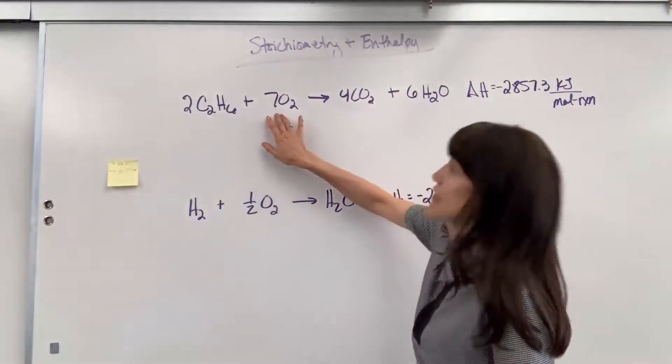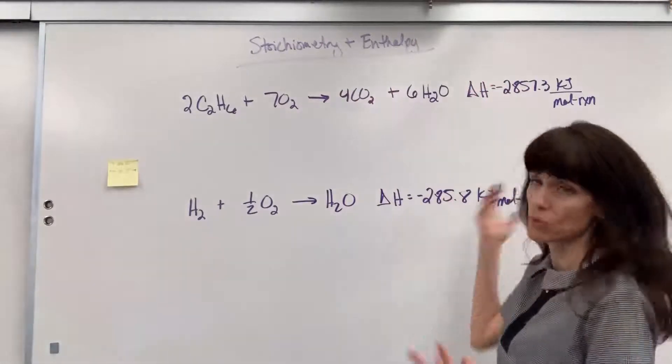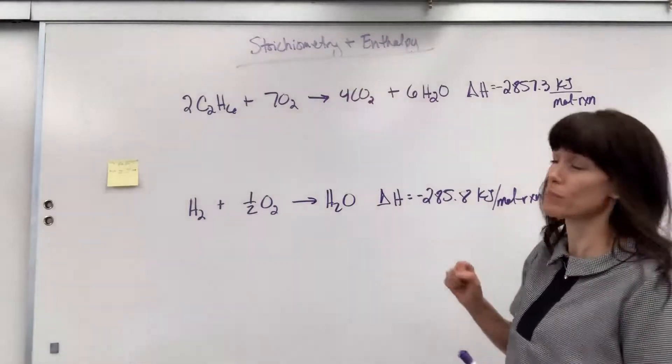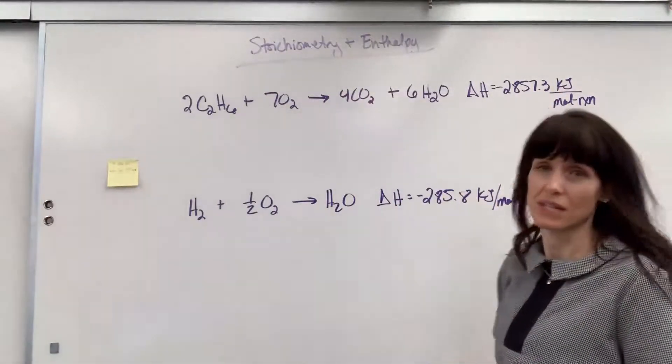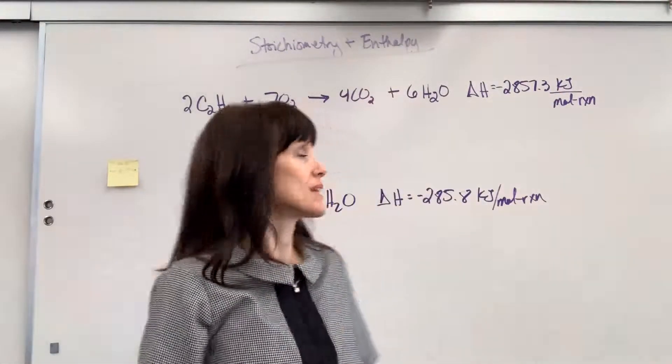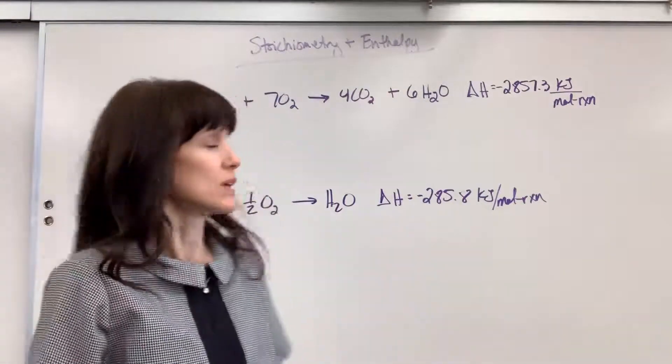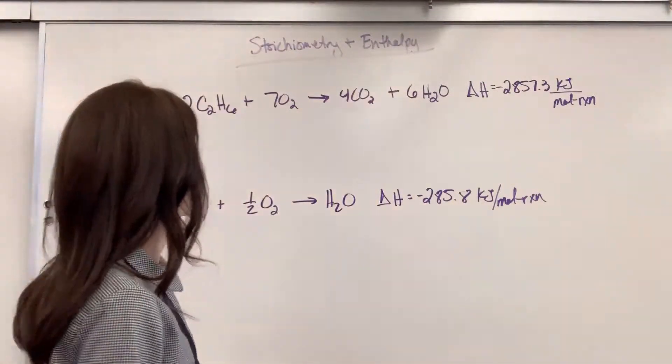If 4 moles of CO2 are produced or 6 moles of water are produced, it releases 2,857.3 kilojoules. So I'm going to give you an example. I'm going to do two examples with thermochemical equations.